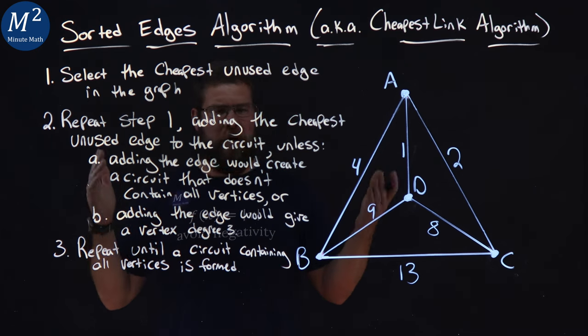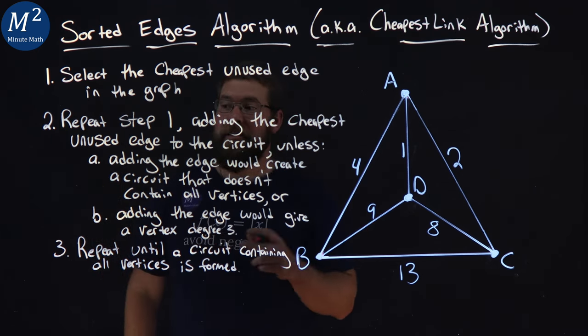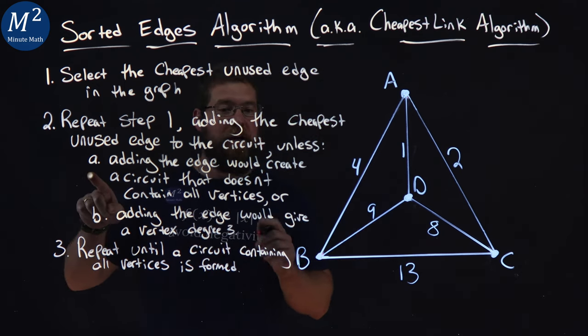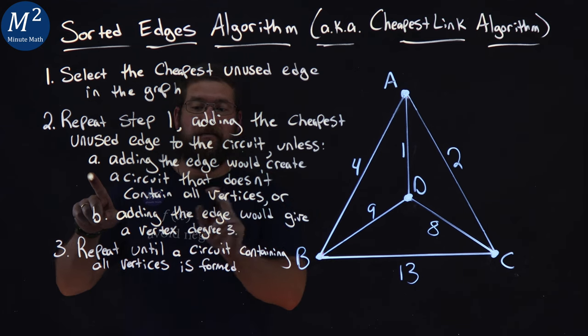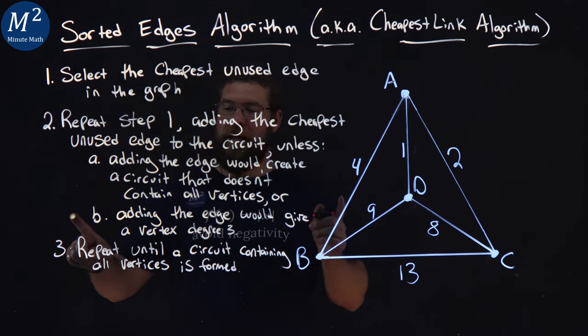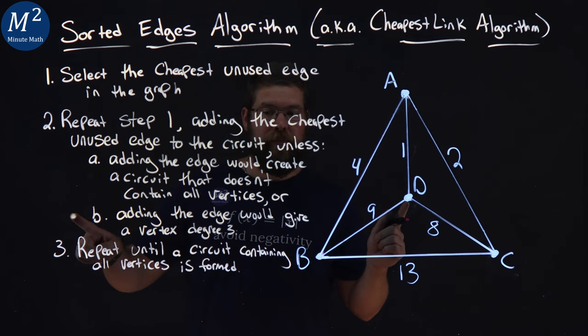Second step. Repeat step one, adding the cheapest unused edge to the circuit, unless adding the edge would create a circuit that doesn't contain all vertices, or adding the edge would give a vertex degree three.